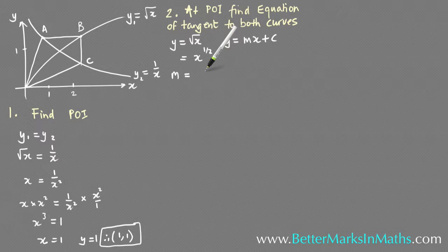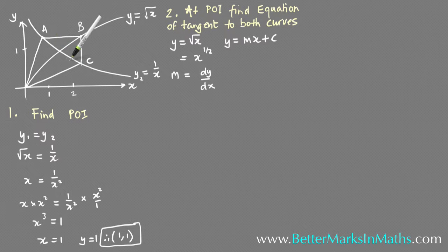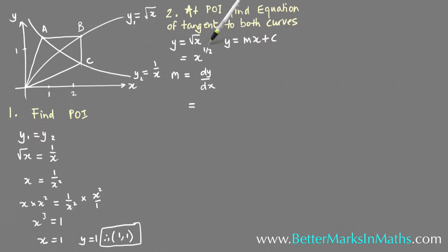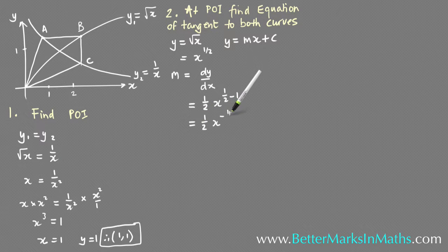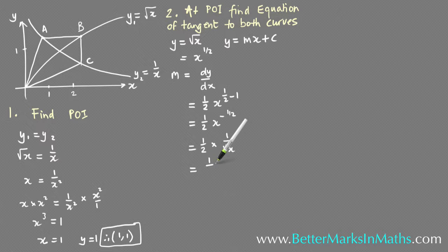The gradient m equals dy/dx, because the gradient of the tangent equals the gradient of the curve at the point where it touches. For y equals x to the power of one half, bringing down the power gives dy/dx equals one half x to the minus one half, which equals 1 on 2√x.